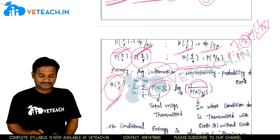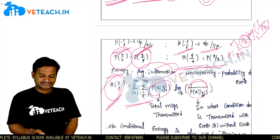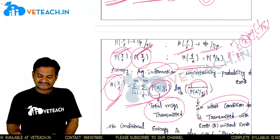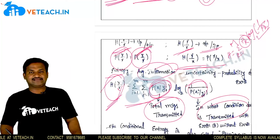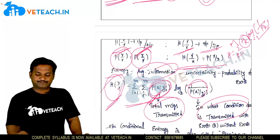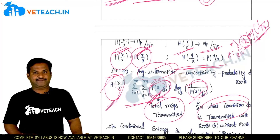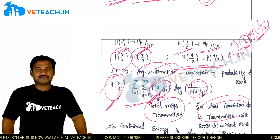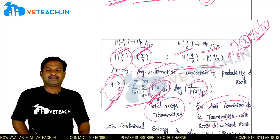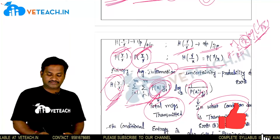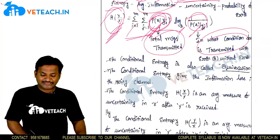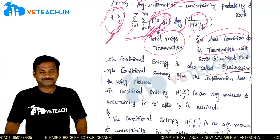H(x|y) = Σi Σj p(xi, yj) · log(1/p(xi|yj)), base 2. Similarly, H(y|x) = Σi Σj p(xi, yj) · log(1/p(yj|xi)), base 2. The conditional entropy H(y|x) is also called equivocation.